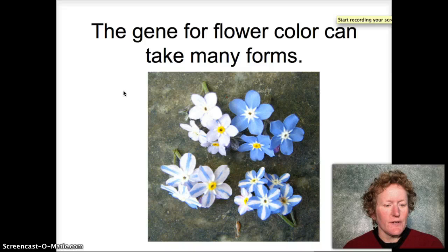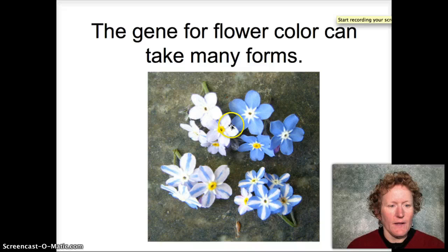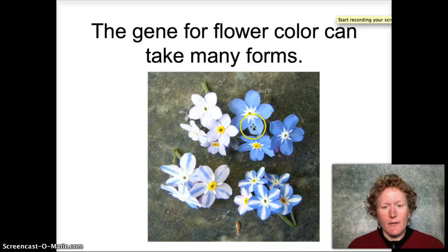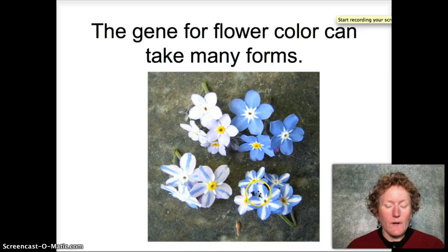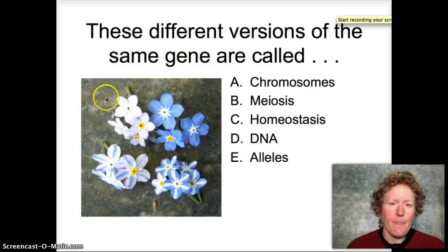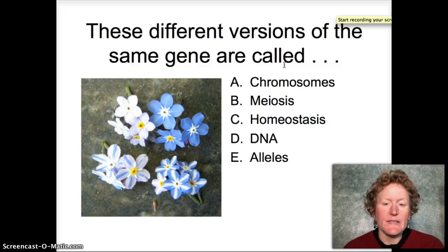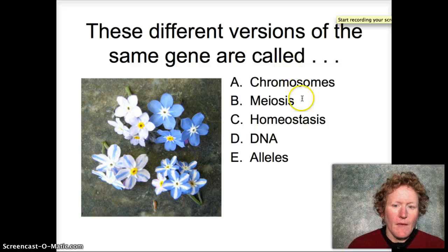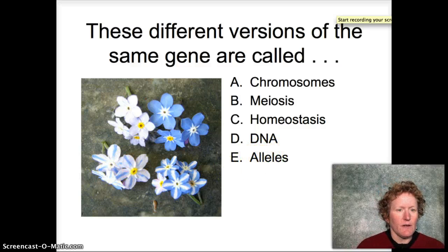Genes have different versions or different forms. Here's a gene for flower color, and you can see you can have the gene for white, the gene for blue, expressed as stripes, or expressed as the inverse of stripes. These different versions of the same gene are called alleles. Different versions of the same gene are called alleles.